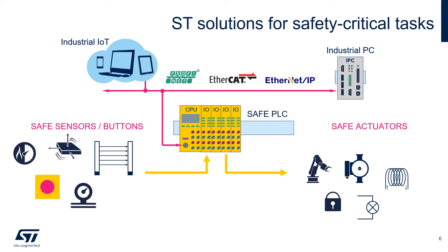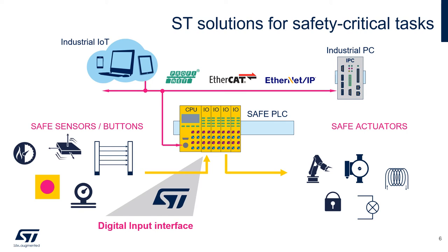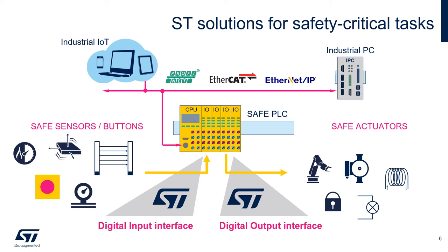Data from these devices are processed by the digital input interface of a programmable logic controller. Typical safe actuators are safety door locks, signaling lamps, valves, and so on. These devices are controlled by the digital output interface. Sensor and actuator data are concentrated in the PLCs and transported to the enterprise level control and management systems through Ethernet-based industrial networks like Profinet, EtherCAT, and so on.